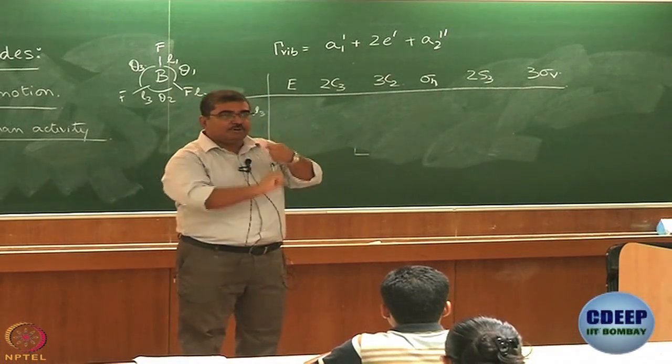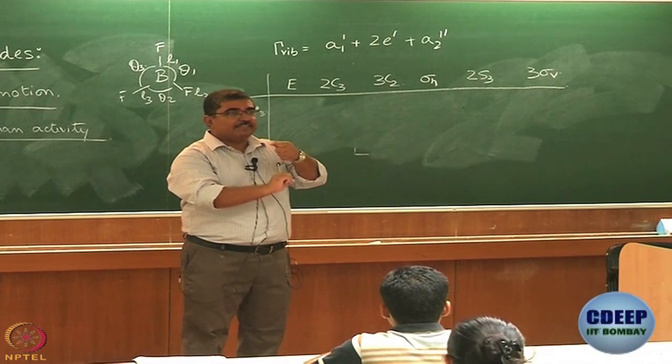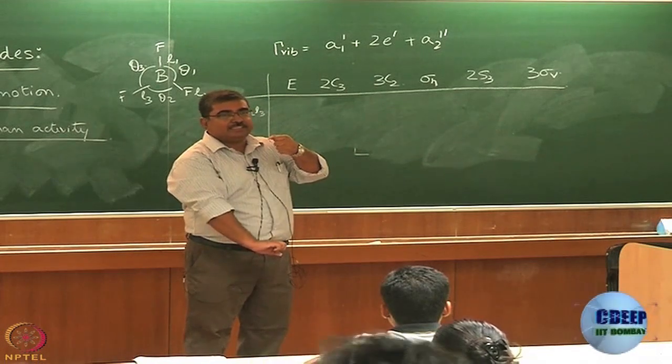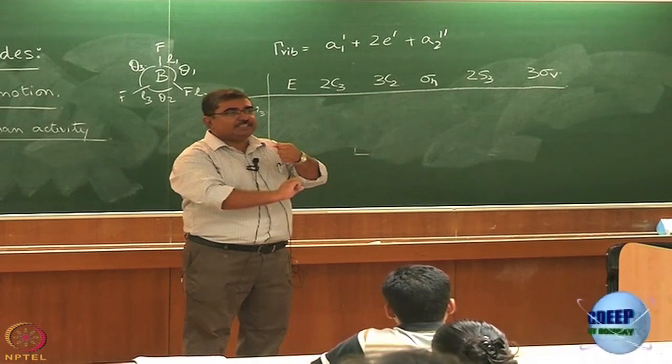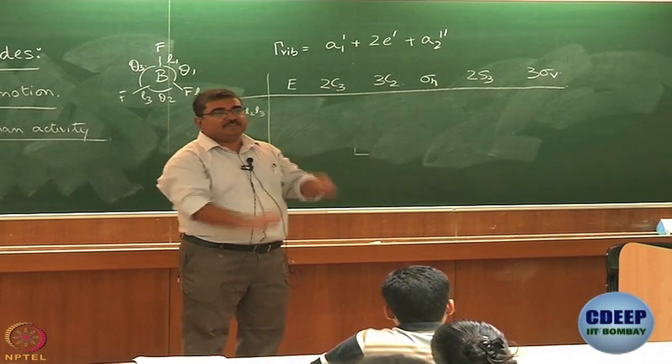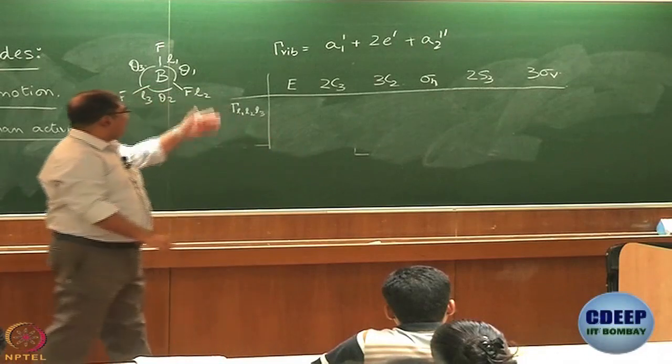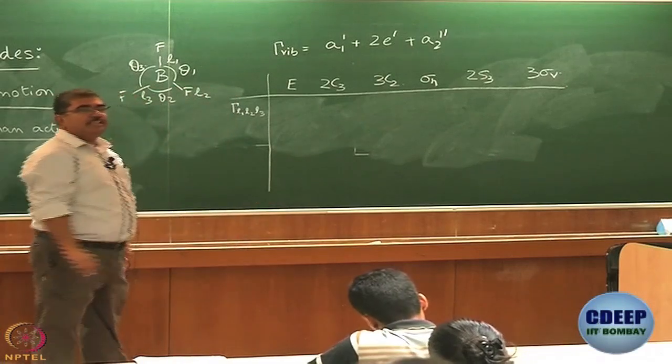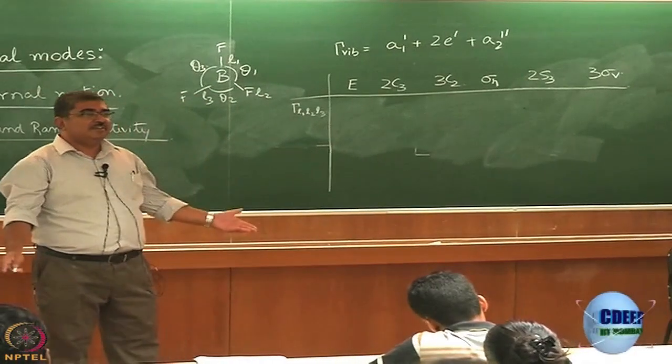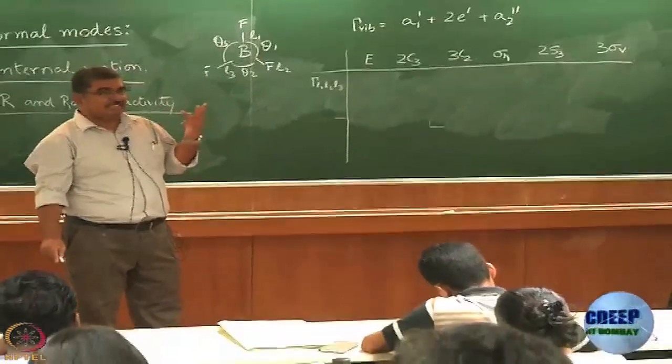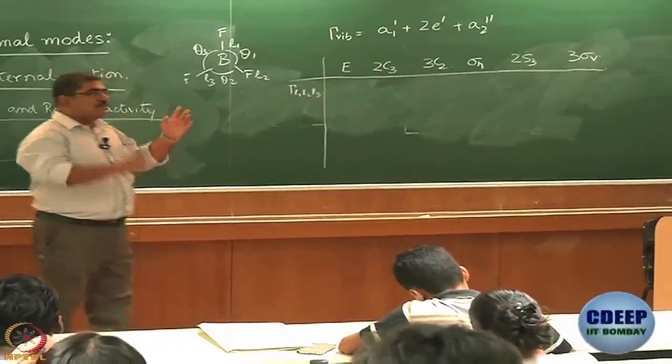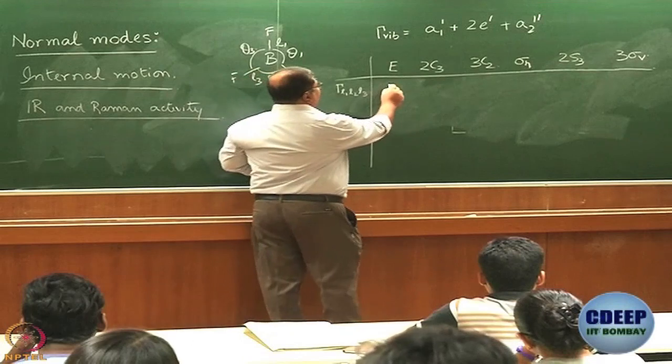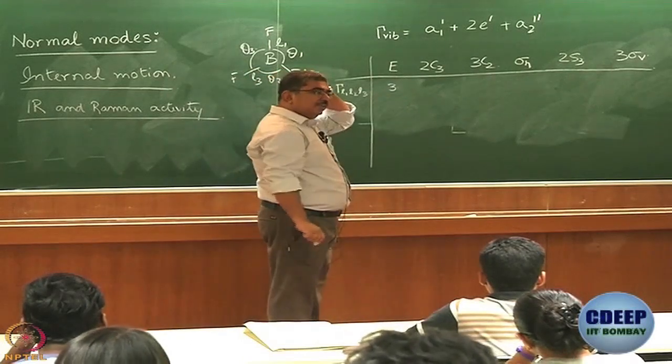So I am now taking each bond as a coordinate. When it stretches, it is plus L1, plus L2, plus L3. When it compresses, it is minus L1, minus L2, minus L3. So what will be the character for E? There are three coordinates, one for each. Remember, what is the matrix? 1, 0, 0; 0, 1, 0; 0, 0, 1. So character is three. Remember, character of E is equal to the dimensionality of the representation.